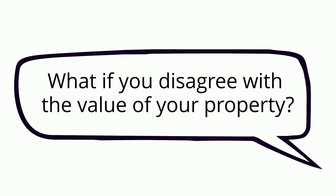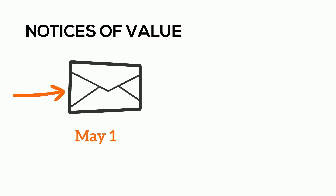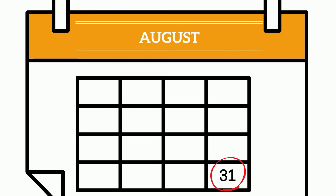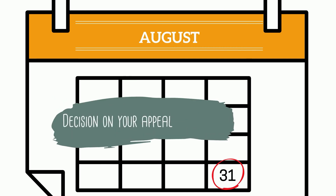What if you disagree with the value of your property? Notices of value are mailed out by May 1st of every odd-numbered year. You then have the entire month of May to appeal that value to the Assessor's Office. By August 31st, a decision on your appeal will be mailed to you.